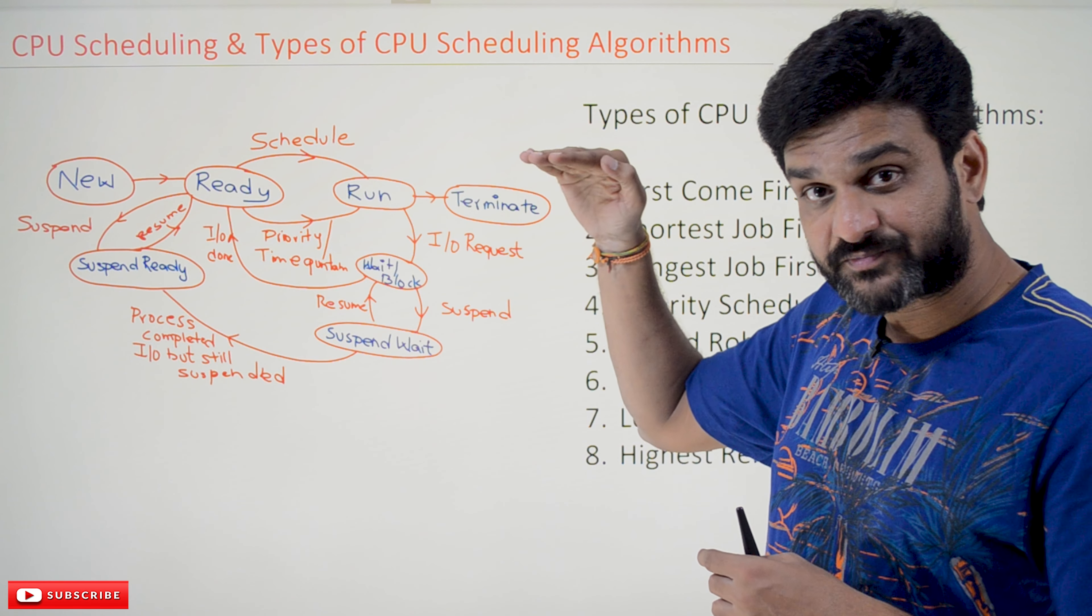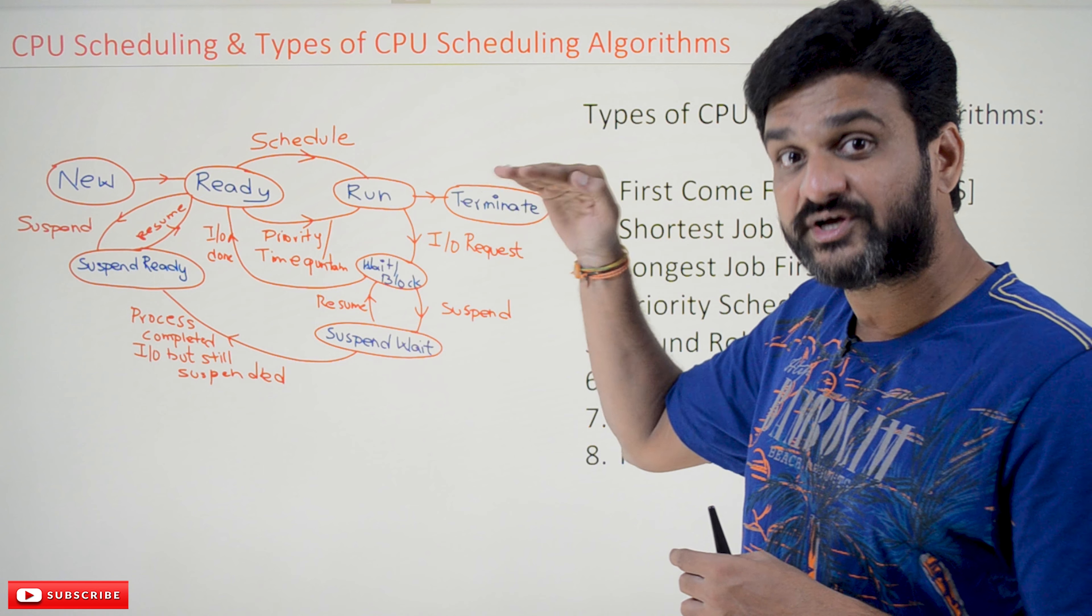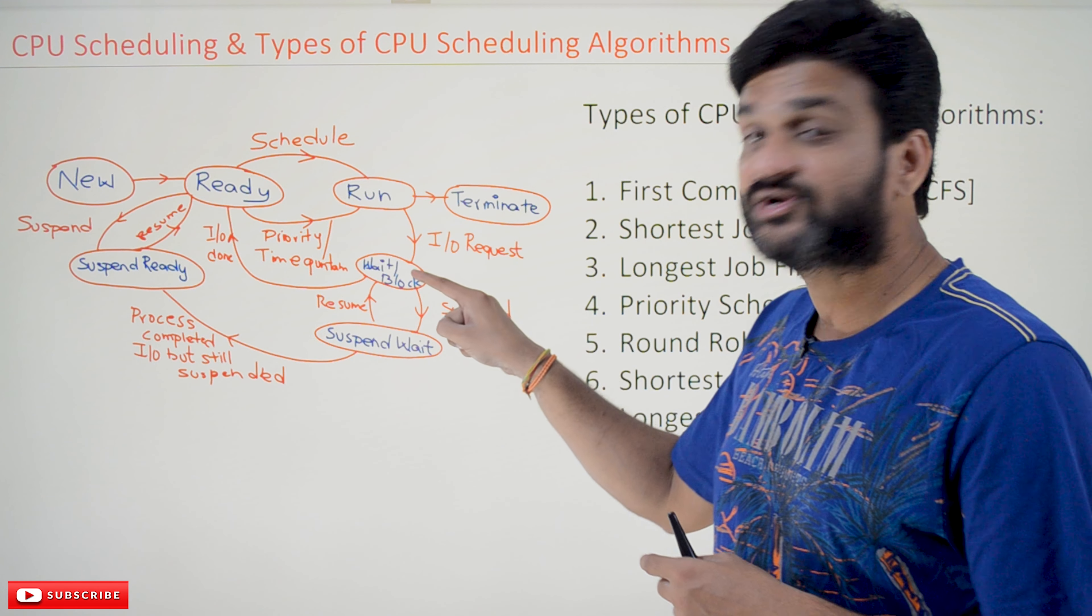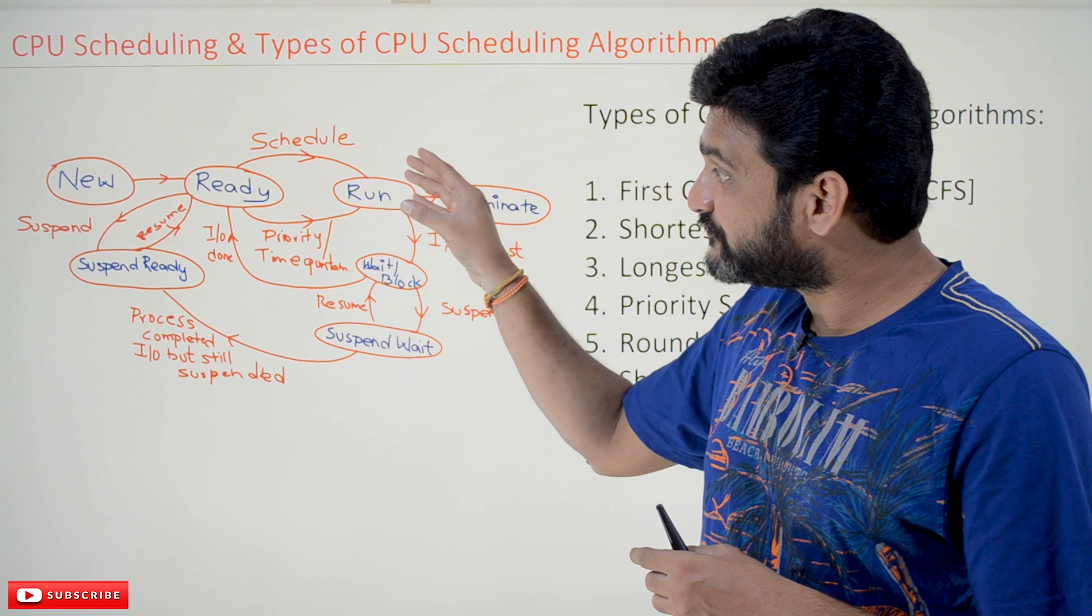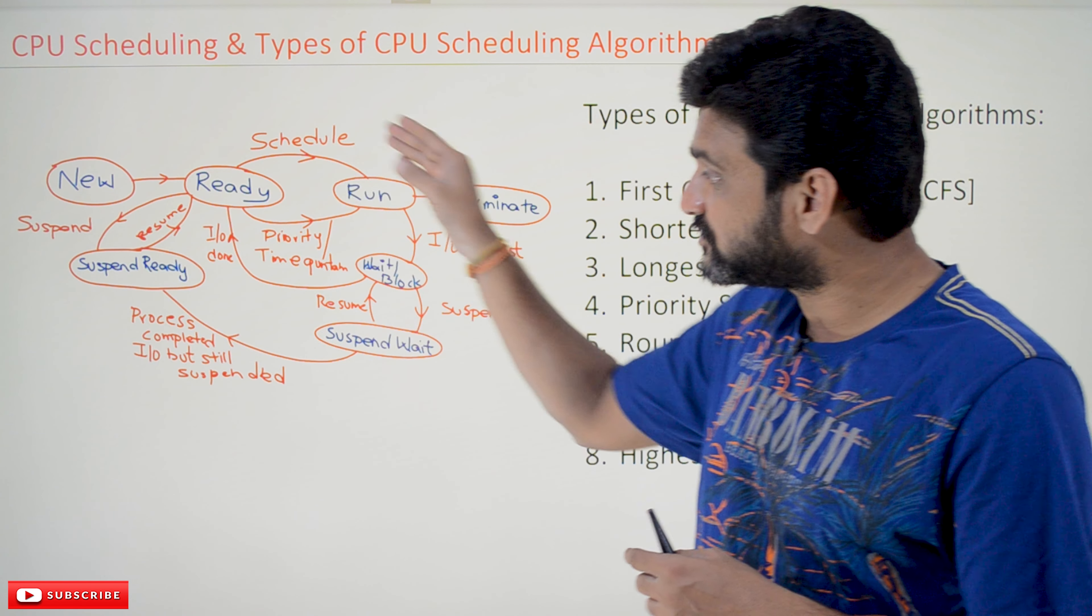And whenever the process is executing an I/O instruction, that process will be shifted to wait or block state. When that process is getting shifted to ready state or to the wait state, the operating system has to schedule another process for the CPU.